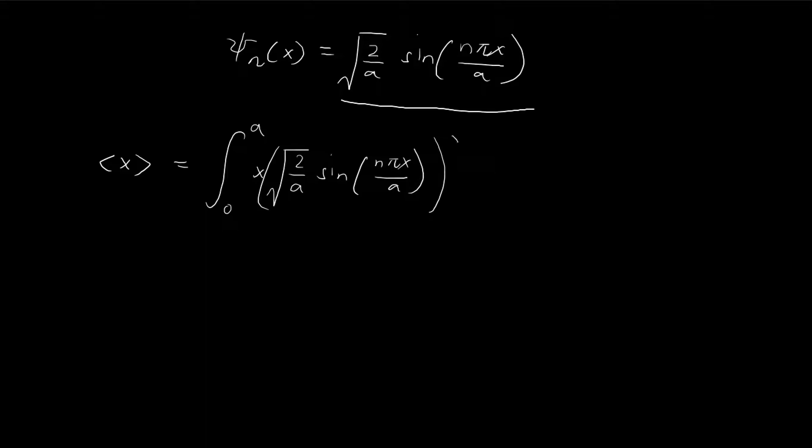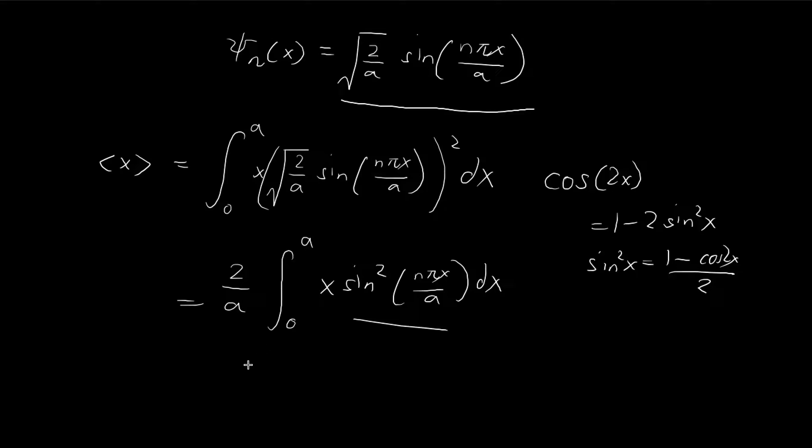Once we've set up this equation, all we have to do is solve an integral. So x sine squared n pi x divided by A dx. In order to solve this, let's try to get rid of the square symbol over here. I'm going to use the double angle formula. Cosine 2x equals 1 minus 2 sine squared x. So sine squared x is actually equal to 1 minus cosine 2x divided by 2. Applying it to this expression, the sine squared x becomes 1 minus cosine.